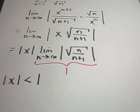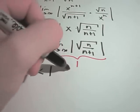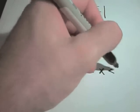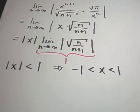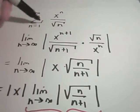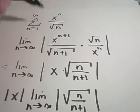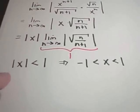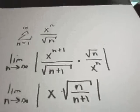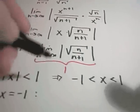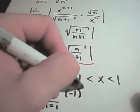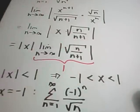We want to figure out when the absolute value of x is smaller than 1. That gives us x between negative 1 and positive 1. So any number between negative 1 and positive 1 plugged in for x will make the series converge. Now we have to check the endpoints separately. Plugging in x equals negative 1 into the original series gives the summation from n equals 1 to infinity of negative 1 to the n over the square root of n.